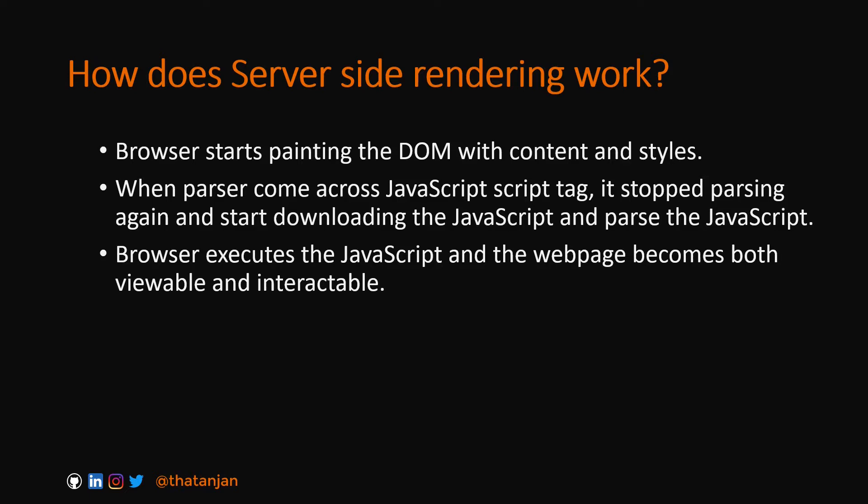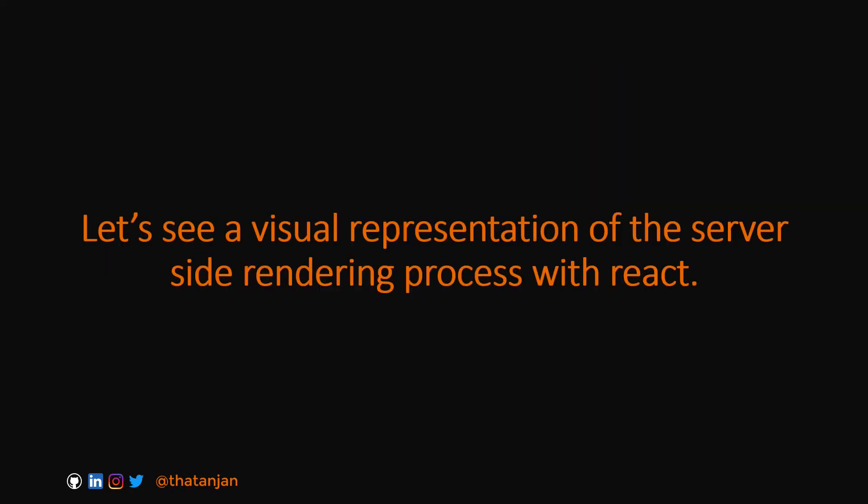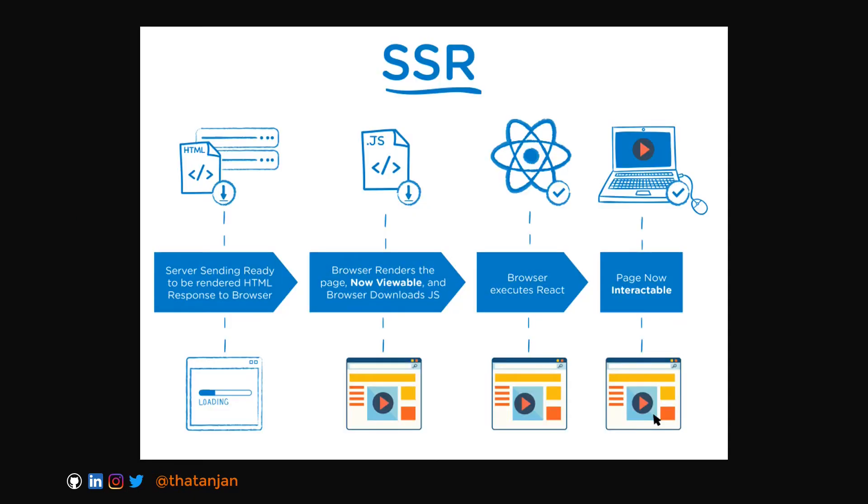After CSS parsing is done, it starts parsing the HTML again. While the HTML is being parsed, the browser starts painting the DOM with content and styles, because the CSS is already downloaded and parsed. That's why we can show the user not only the content but also the styles, which makes the user experience better. When the parser encounters a JavaScript script tag, it stops parsing again, downloads the JavaScript, parses it, executes it, and the web page becomes both viewable and interactable.